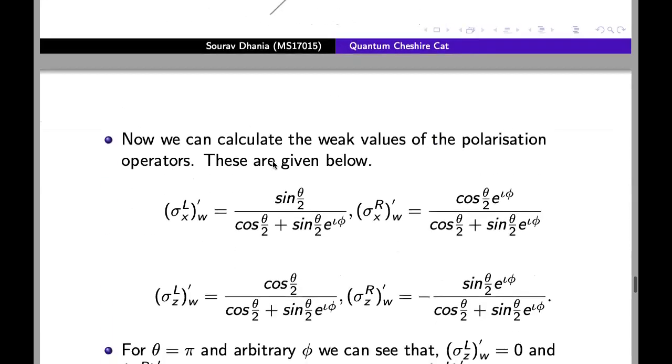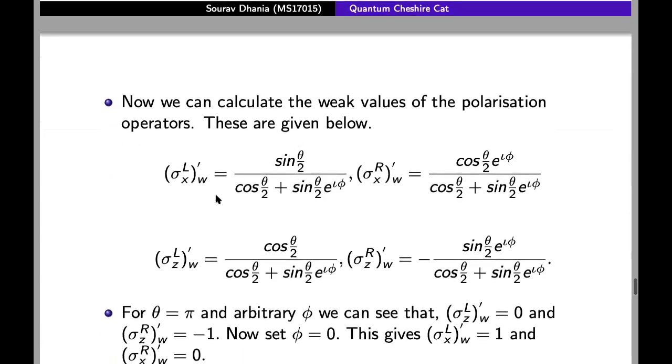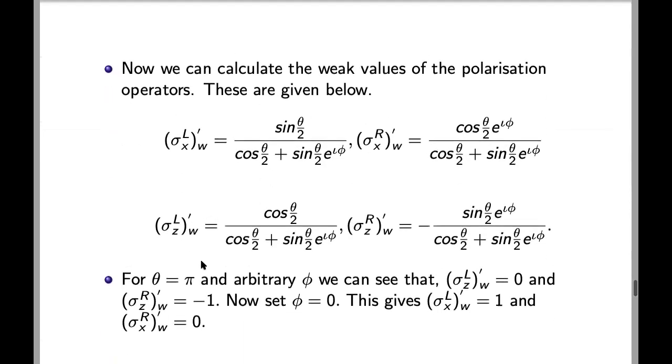Now we can calculate the weak values of the polarization operators and these are given by this. For theta is equal to phi and arbitrary phi, we can see that the z component of the polarization goes through the right arm. And now if we set phi equal to zero, we see that the x component of the polarization goes through the left arm.